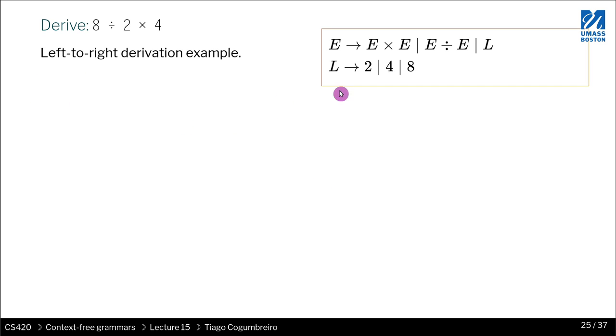So let us consider the following grammar. This is a grammar that is representing an arithmetic expression. You have the starting variable, which is E for expression, and then you have another variable, L, for literal. And in this grammar, we have six rules.